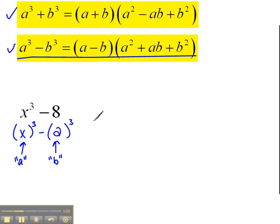By doing this, we can see now what our a value is and what our b value is. And, then we can just use the formula. So, this will factor into, remember using our pattern here, a minus b, which in this case would be x minus two.